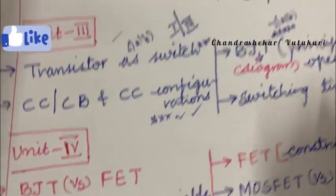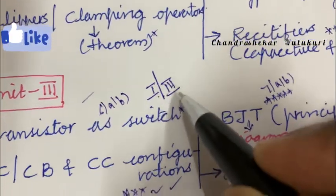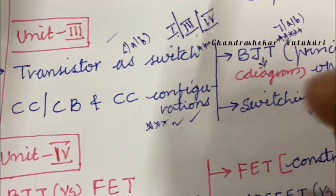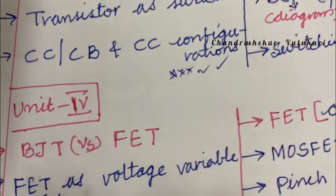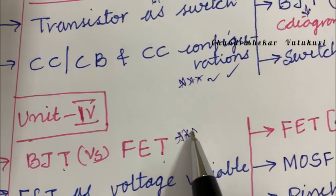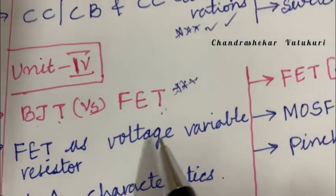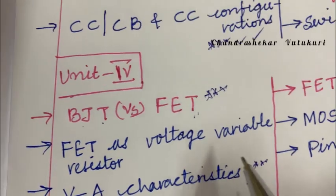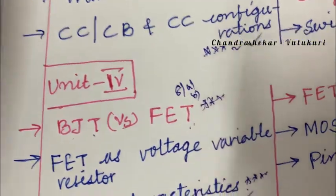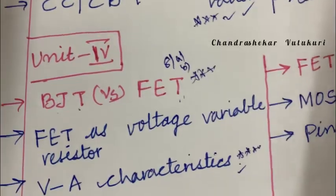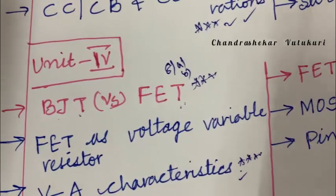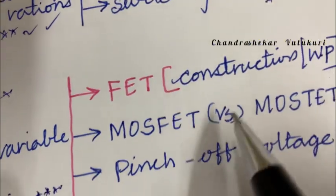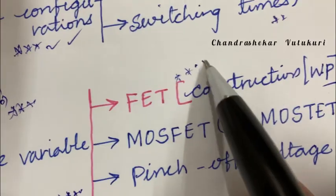A student looking to just pass can work out Units 1, 3, and 4. Unit 4 is also very easy and important. There is some continuity between Units 3 and 4, so if you are working on Unit 3, do concentrate on Unit 4 as well. BJT versus FET comparison is the topmost question, or they may ask each individually as short questions. FET as a voltage variable resistor and VA characteristics — that is, voltage and current characteristics — are set to be the topmost question in 8A and 8B.